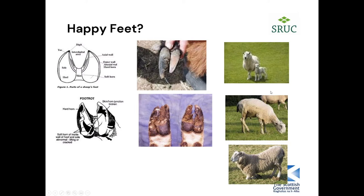On the right we have pictures of sheep demonstrating obvious lameness. Not having a foot on the ground is an obvious sign, however if you're just passing you may not notice — some sheep naturally kneel to graze. You may not notice if some sheep are doing it far more often and for longer periods, which is a sign that there may be a lameness in the front limb.